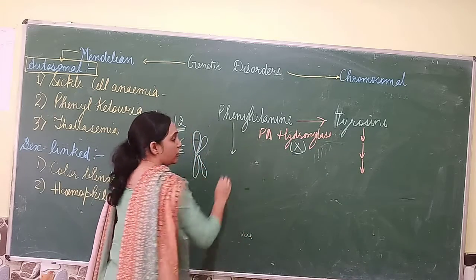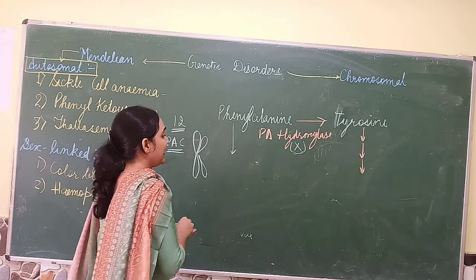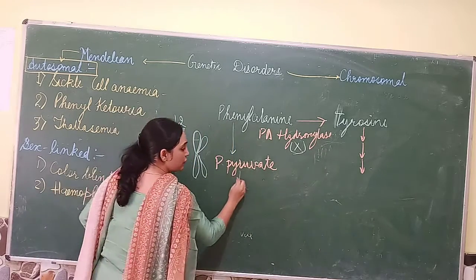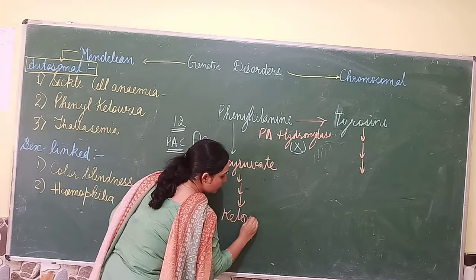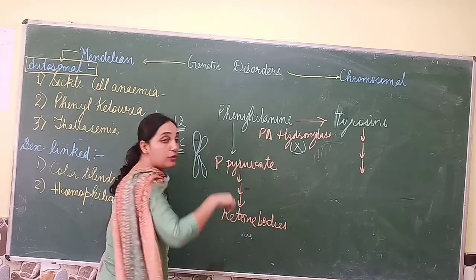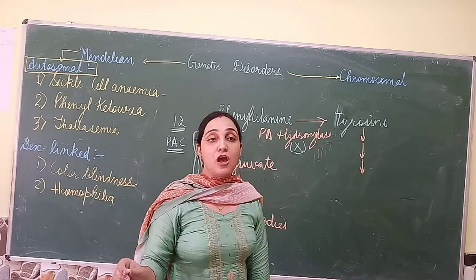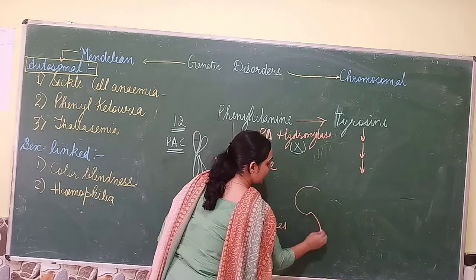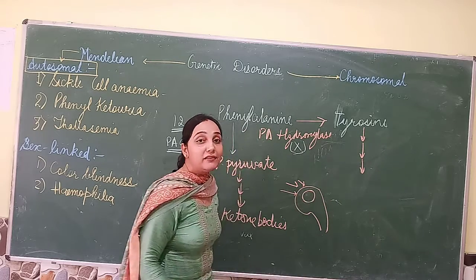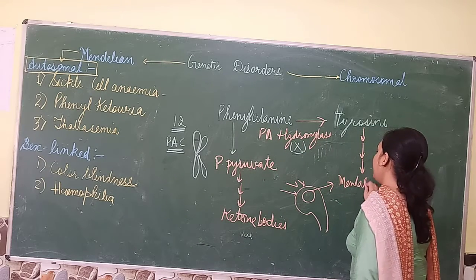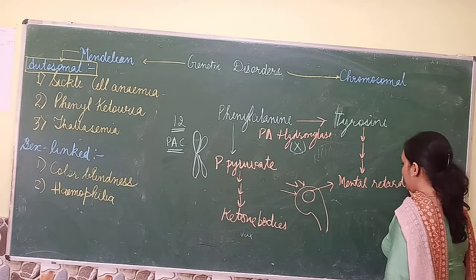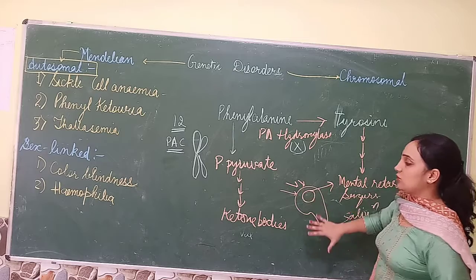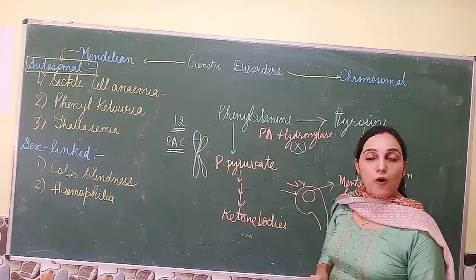When the PAH gene is mutated, phenylalanine gets converted into phenylpyruvate. Due to the presence of phenylpyruvate, it undergoes a series of reactions and in the end forms ketone bodies. Ketone bodies are toxic substances which cross the blood-brain barrier, enter the brain, and cause mental retardation and CNS effects. This is all about phenylketonuria.